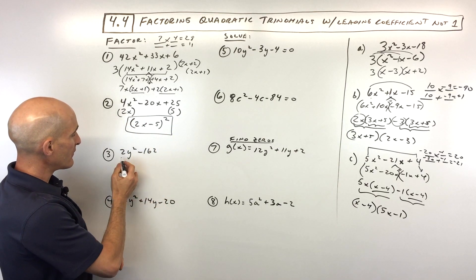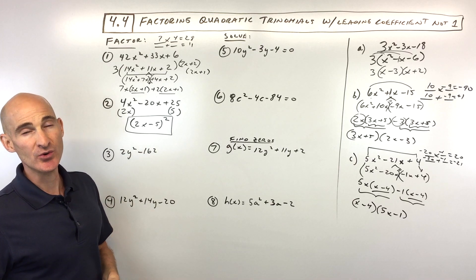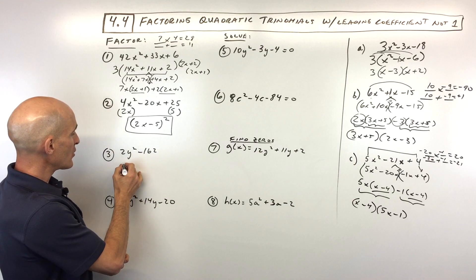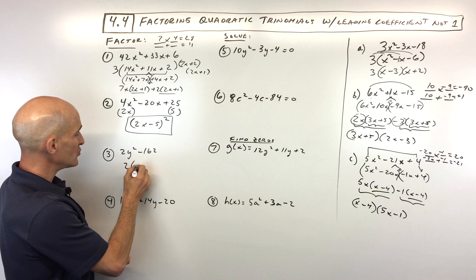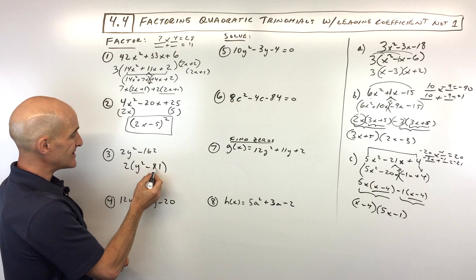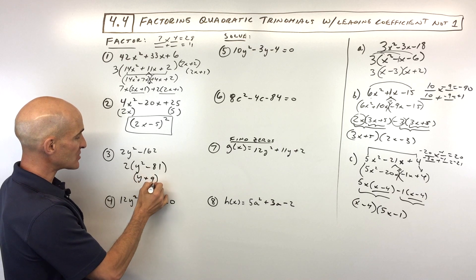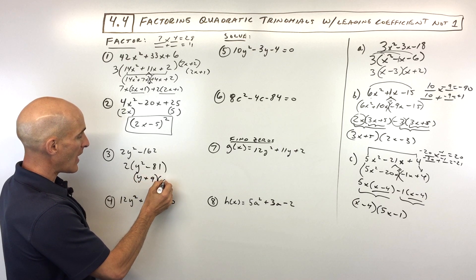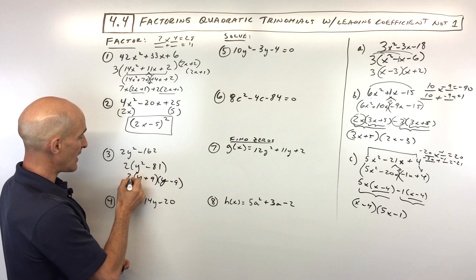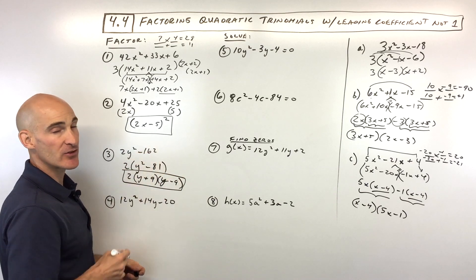Number 3: 2y squared minus 162. Here we factor out a 2, our greatest common factor, and we're left with a difference of two squares: y plus 9 and y minus 9. Bring down that 2. So the answer is 2 times y plus 9 times y minus 9. If we multiply all this together, we'd get back the original.